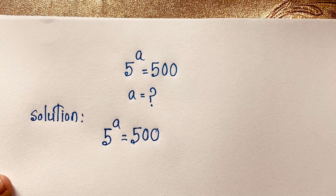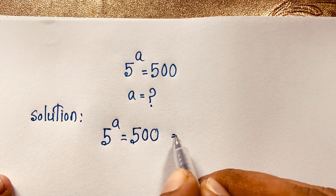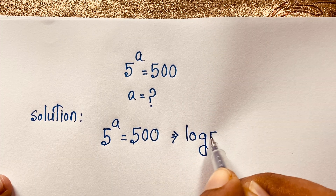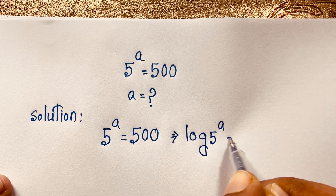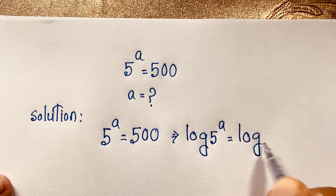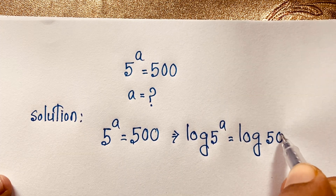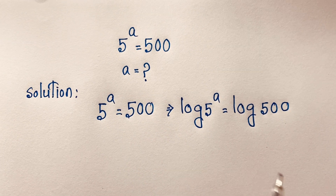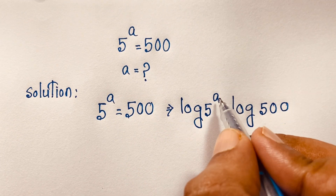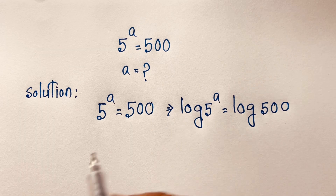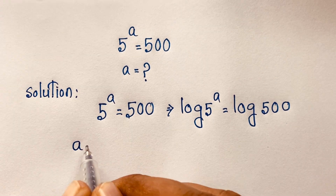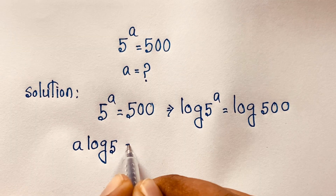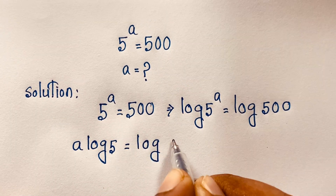Now I apply log to both sides. So log of 5 to the power a is equal to log 500. According to the logarithm exponent rule, the exponent moves in front, so it becomes a·log 5 is equal to log 500.